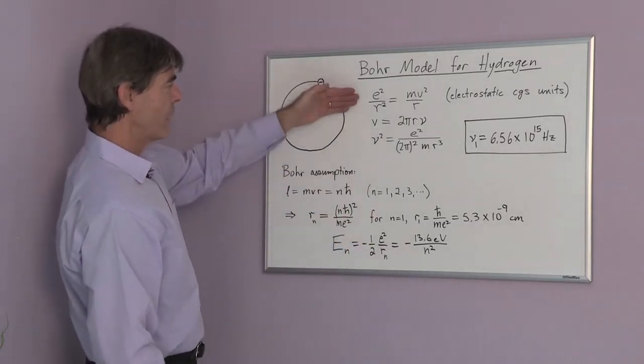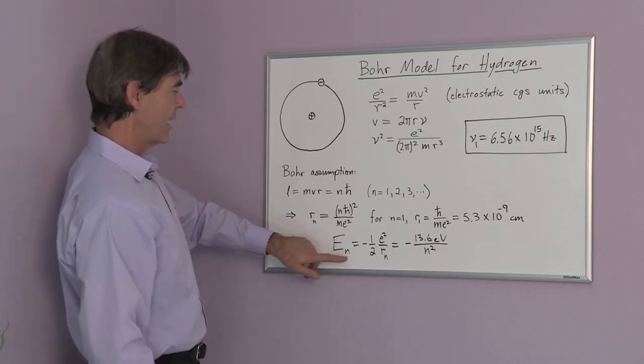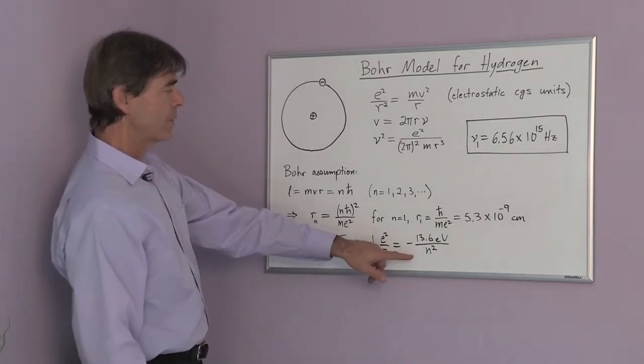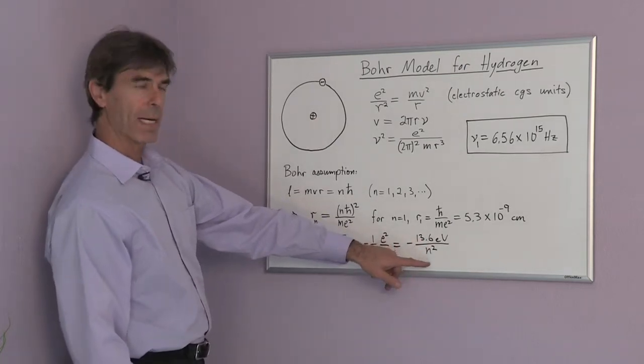We can now solve the equation and the energy of the n orbital is equal to, substituting n, minus 13.6 electron volts divided by n squared.